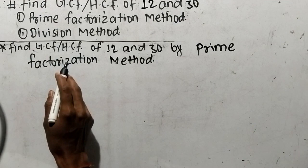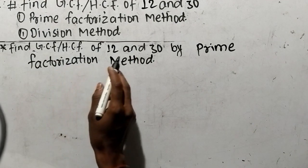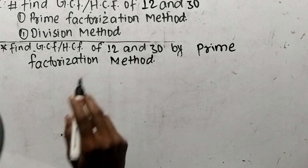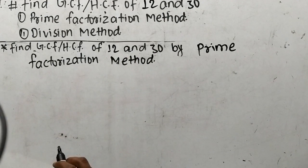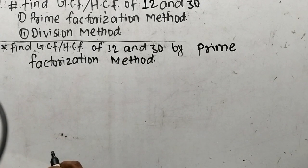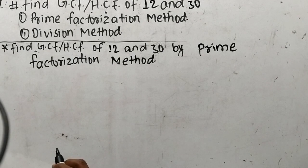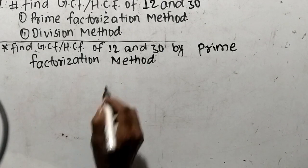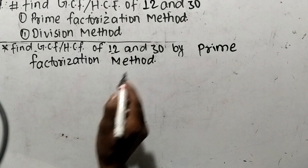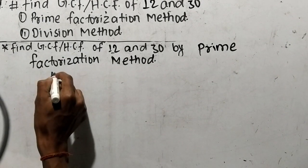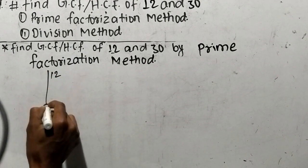Let's find out GCF or HCF of 12 and 30 by prime factorization method. While finding out GCF or HCF by prime factorization method, first of all we have to find out the prime factors of given numbers, where the numbers are 12 and 30. So let's find out the prime factors of 12 first.